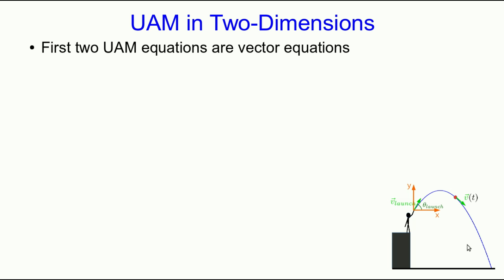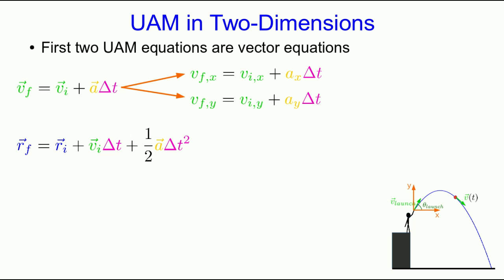So because the acceleration is constant, we'll get to use our old familiar uniformly accelerated motion equations, except that we're now in two dimensions and so we have to use their full vectorial forms. The first two UAM equations are vector equations. Here they are written as vector equations, and so the first one will separate out into two component equations like so. In the first one, we note that for a projectile ax is zero, and so that turns it into a rather trivial equation that isn't even particularly useful.